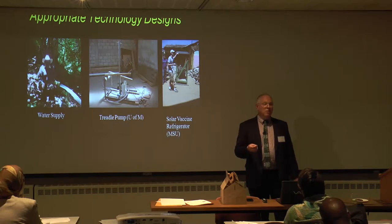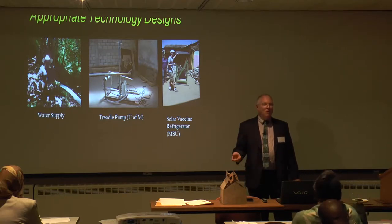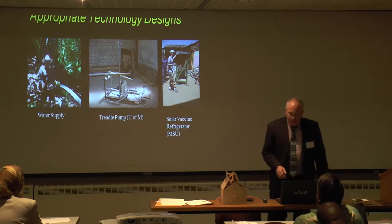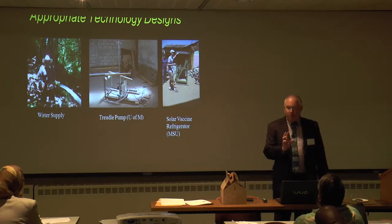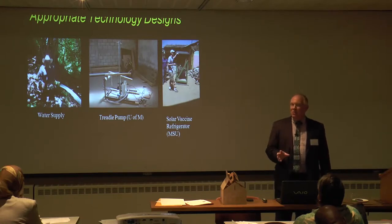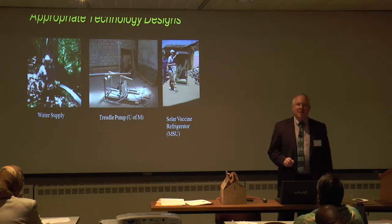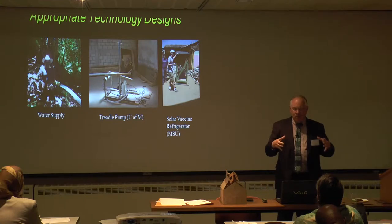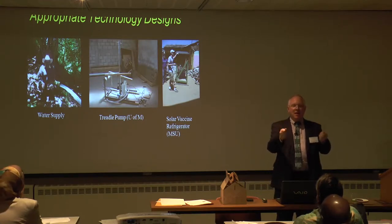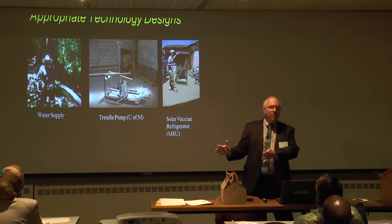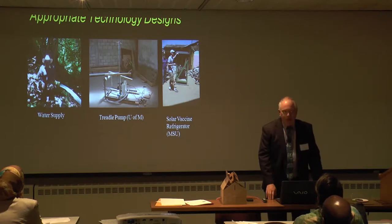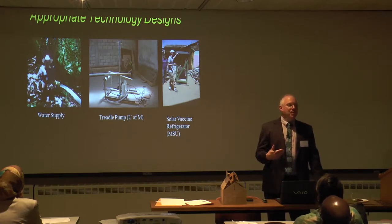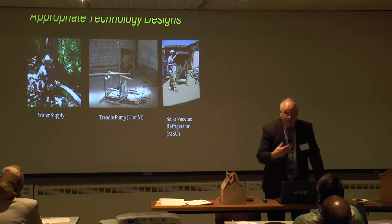The treadle pump is for rural farmers living in areas with one growing season — a rainy season and then dry for the rest of the year. If you can control the amount of water on your property, you can grow crops during the dry season. About 100 million farmers live in areas where the water table is close enough that a treadle pump would allow them to grow crops year-round. We designed this with students from Michigan, put it online, and it's been picked up thousands of times around the world. We now have a more compact version developed with Michigan State. We're considering selling just the valve box so people can build the rest of the pump themselves — maximizing local manufacturing in the country where it's used.